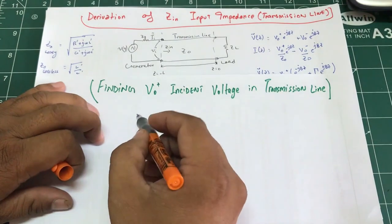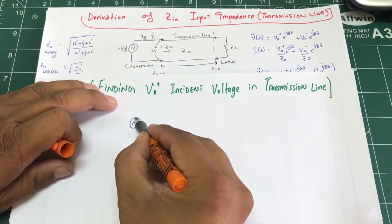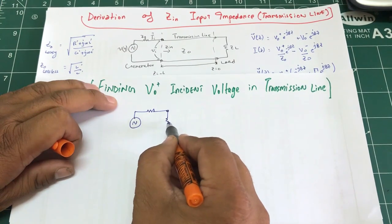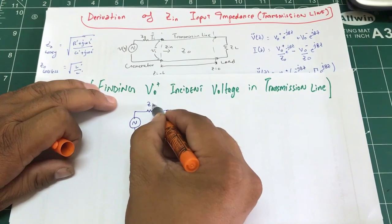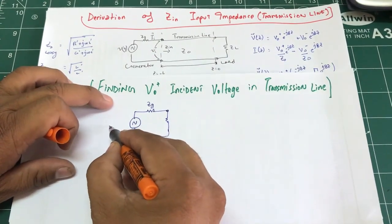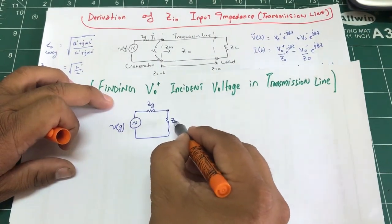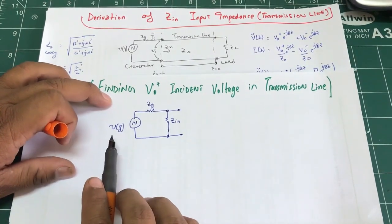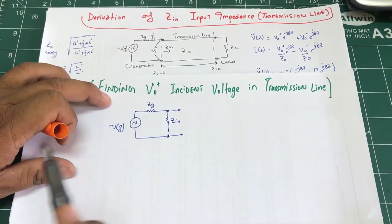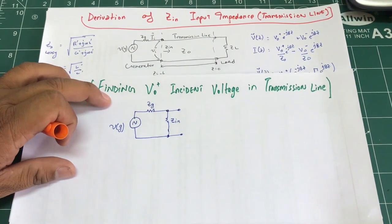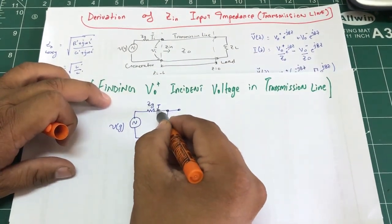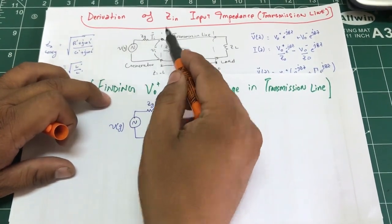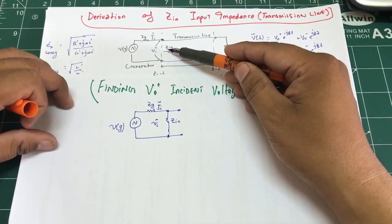If I were to shrink this circuit down, it would look something like this: I have my Zg, and this is my generator voltage Vg being generated. This is my Zin. I want to find out what is this voltage — even though the generator is generating some voltage, due to that input impedance how much voltage is actually going into my transmission line. I have some current i going in, and some voltage Vi across Zin.